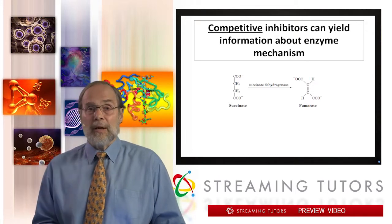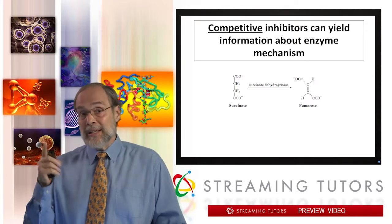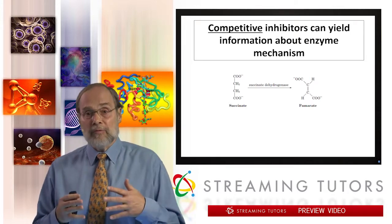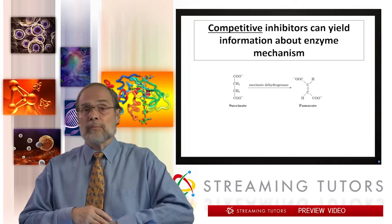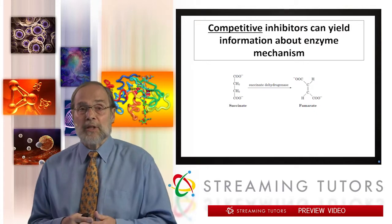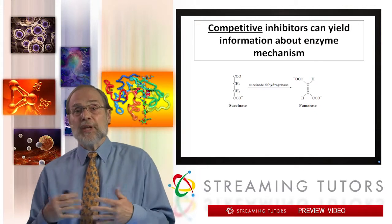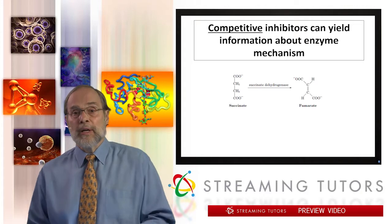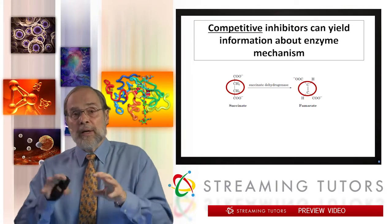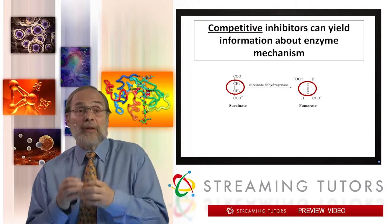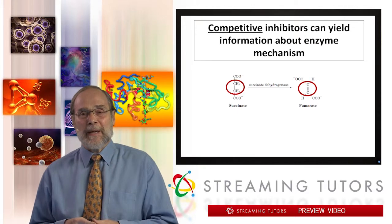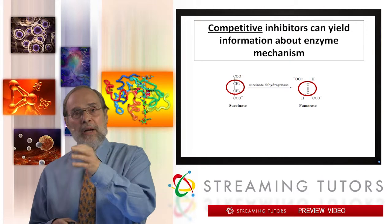Let me show you an example of a classic competitive inhibitor. Shown here is a standard metabolic reaction going on in every cell in your body — the conversion of succinate into fumarate. A single bond has been oxidized to a double bond, and the reducing potential abstracted from that has been transferred to another molecule to do other interesting tasks, as we'll see later.